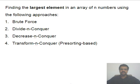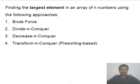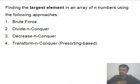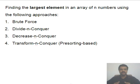Another technique is decrease and conquer: assume you know how to find the largest of n-1 elements, then extend that solution to find the largest of n elements. The largest of n elements is the larger of the largest of n-1 elements and the n-th element itself. Keep doing it recursively until n equals 1. The transform and conquer technique here is pre-sorting based — we sort the list first, and then finding the largest on a sorted list is very easy because it's at the end.